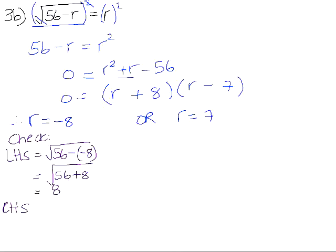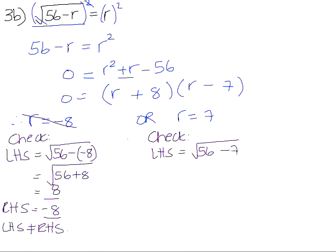The right-hand side was just equal to r, which in this case is negative 8. Now, positive 8 and negative 8 are not the same value, so the left-hand side does not equal the right-hand side, so r equals negative 8 is not a valid solution to the equation. If we check r is equal to 7, the left-hand side is 56 minus 7, that is equal to the square root of 49, and the square root of 49 is 7. The right-hand side is equal to 7, so the left-hand side equals the right-hand side, which means r equals 7 is a valid solution to the equation.